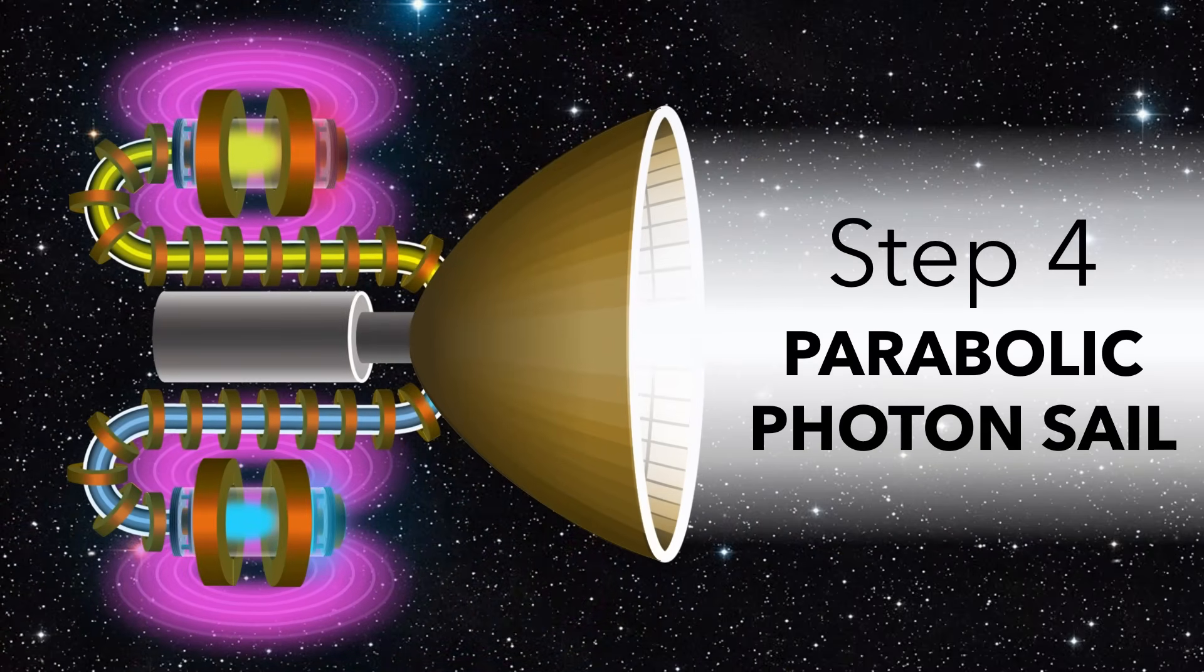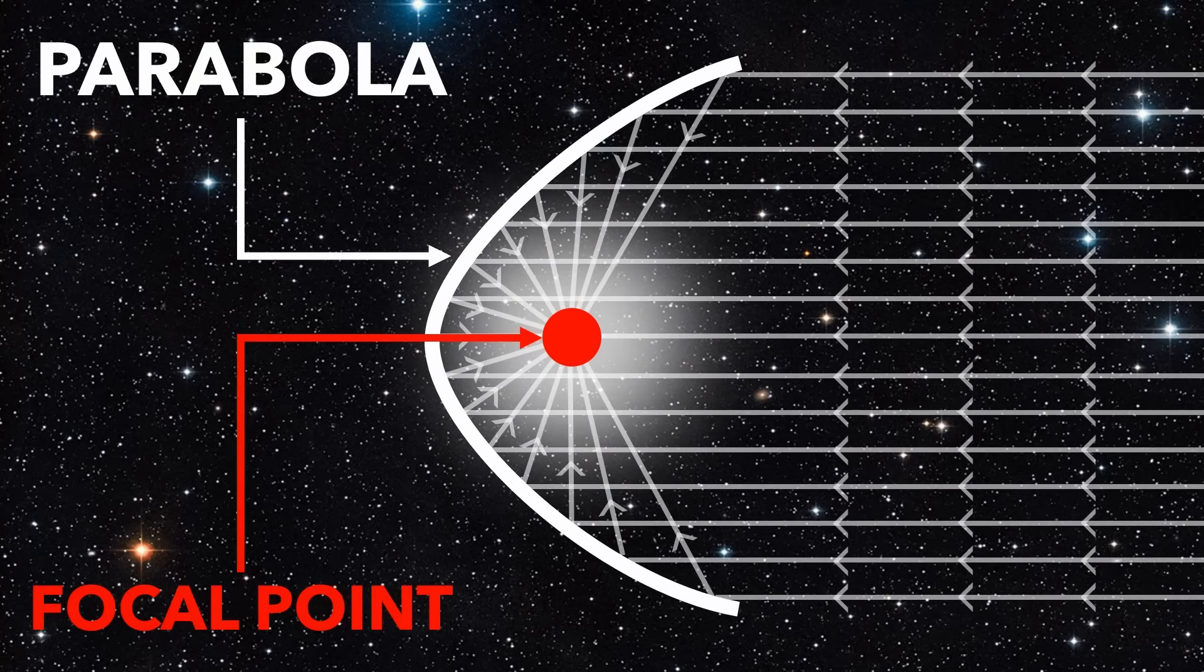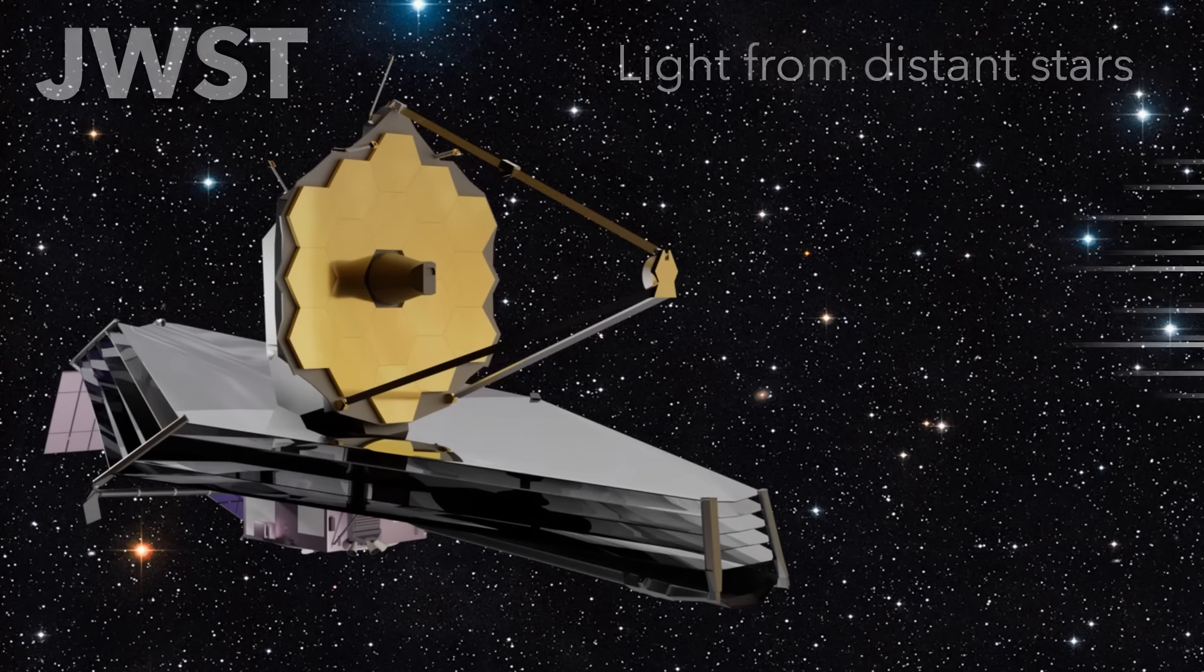Step 4, parabolic photon sail. Parabolas are special shapes that focus all horizontal rays to a single focal point. For example, the James Webb Space Telescope focuses light onto a camera to capture detailed images of the universe.